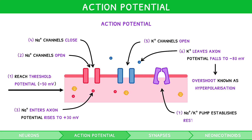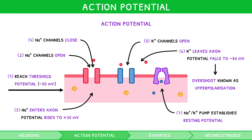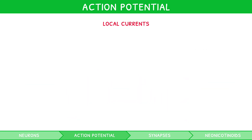To re-establish resting membrane potential of minus 70 millivolts, the sodium-potassium pump must exchange ions for a few milliseconds. Now that the action potential has begun, how does this propagate along the axon? Since only the start receives an impulse to reach threshold potential, adjacent parts must independently reach minus 50 millivolts. This is fulfilled by local currents.